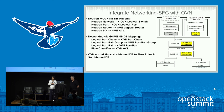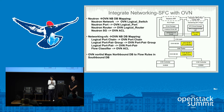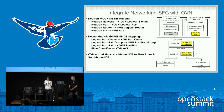On the left side it shows the mapping. For Neutron: a Neutron network maps to an OVN logical switch, Neutron port maps to OVN logical port, Neutron router maps to OVN logical router, and Neutron security group maps to OVN ACL. Similarly for service function chain: the logical port chain maps to OVN port chain, logical port pair group maps to OVN port pair group, logical port pair maps to OVN port pair, and flow classifier maps to OVN ACL. Then OVN northd maps these structures to flow rules in the southbound DB.